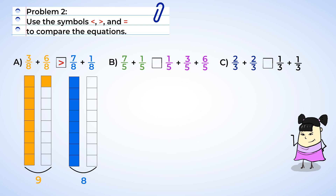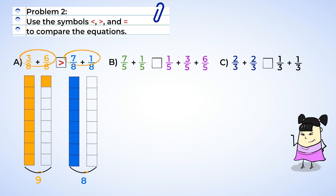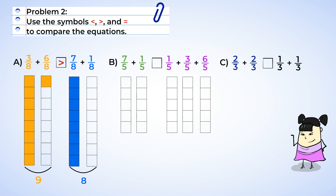Are you noticing anything about the number of sections filled in compared with the numerators of the fractions? It looks like the total number of shaded sections is the same as the numerators added together. Maybe that's a trick to help us. Let's see if it holds true for parts B and C before we use it. Seven-fifths plus one-fifth — we fill in seven sections, and then one more, giving us eight sections. And seven plus one is eight. It looks like we did find a shortcut.